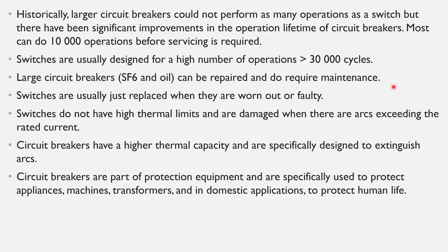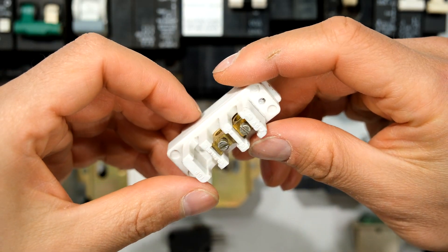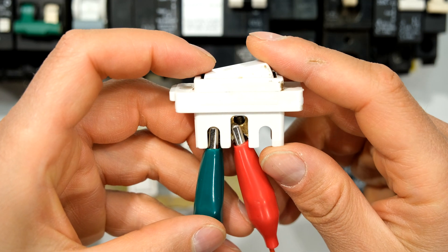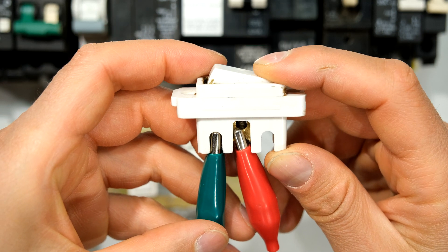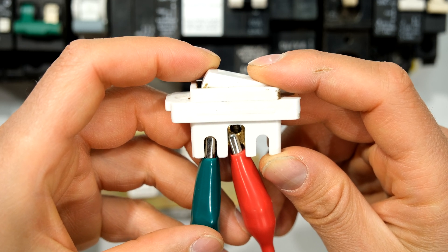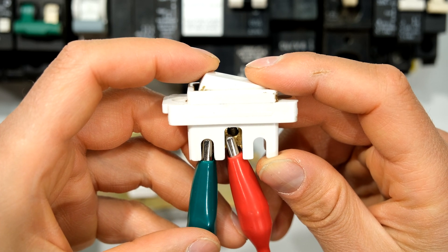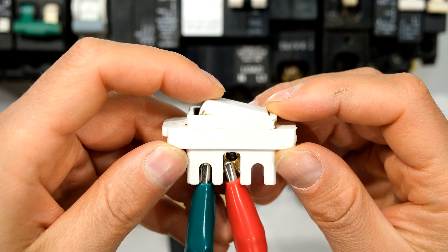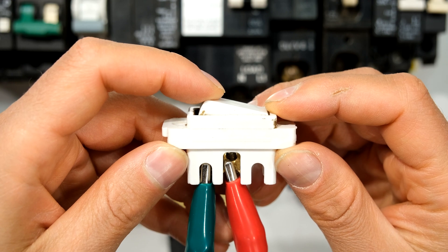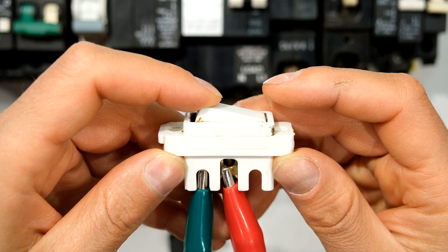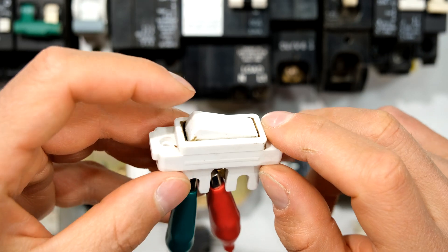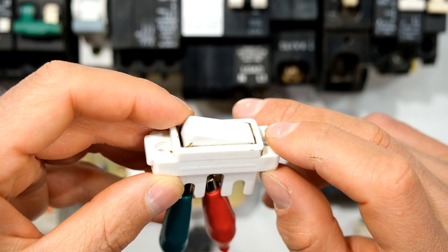Switches do not have high thermal limits and are damaged when there are arcs exceeding the rated current. For example, this switch has a maximum voltage of 250 volts and a maximum current of 16 amps. If the current exceeds 16 amps — say 20 amps — the switch may be damaged. You might find the contacts start to fuse together, and if you operate the switch you might hear it arcing, feel it getting hot, and see it become discolored with carbon buildup.